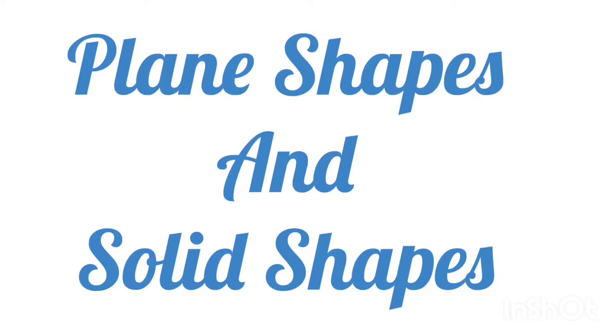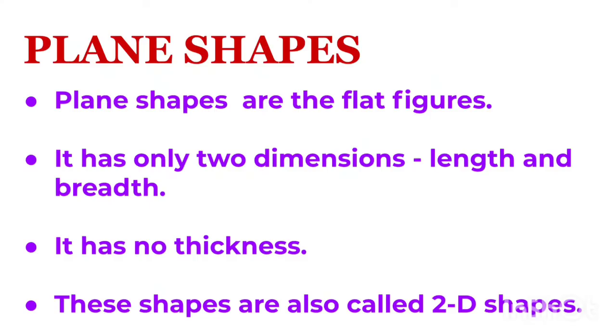Hello children, today we will learn about plane shapes and solid shapes. Plane shapes are flat figures. They have only two dimensions, length and breadth. They have no thickness. These shapes are also called 2D shapes. Let us learn about some plane shapes.